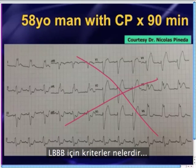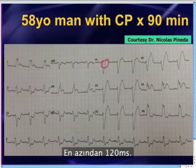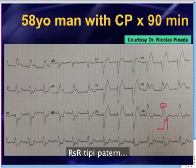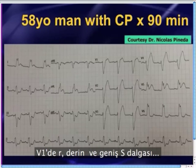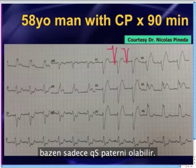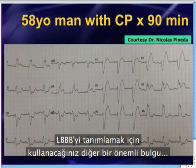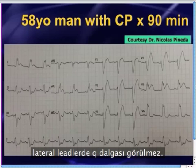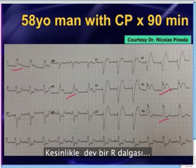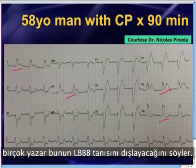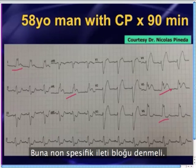The criteria for a left bundle branch block pattern: first, you have to have a wide QRS — at least 120 milliseconds. Lead V6 typically has a rabbit ear pattern, an RSR prime type of pattern, often present in V5 as well. In lead V1, you've got a little R and deep wide S wave, sometimes just a QS pattern that persists into V2 and V3. Also, a left bundle is such a powerful leftward force you should not have any Q waves in the lateral leads — just big R waves. If you see even a tiny Q wave in those lateral leads, many authors say that obviates the diagnosis of left bundle and you have to call it a nonspecific conduction delay.